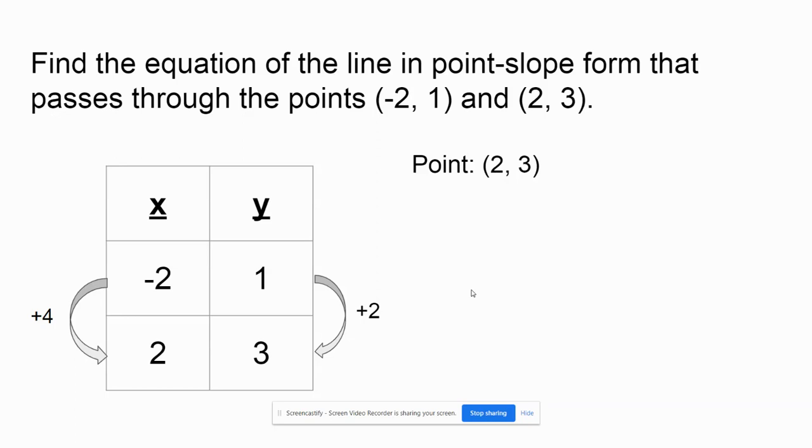I could have used the point negative 2, 1. It would have been totally fine. Now I want to look at the slope. On a graph, we look at the slope as being rise over run. In a table or any other type of information other than a graph, we're looking at how much y has changed over how much x has changed.